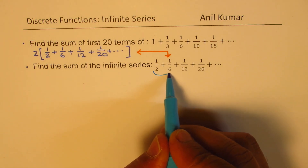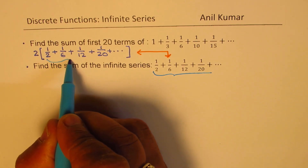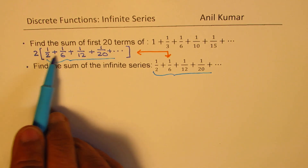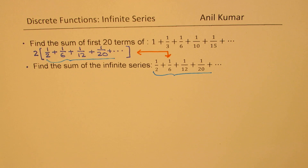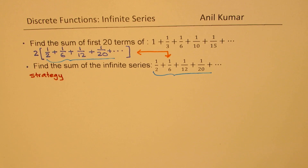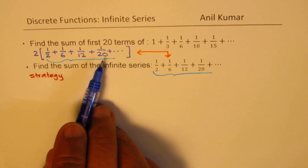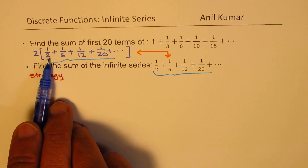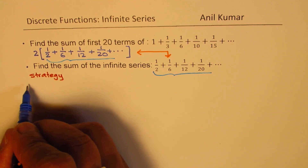The first one is twice the other — they are exactly the same series. So we will now figure out an approach or strategy to solve such questions. This is an important strategy, as it really helps you solve some of the very difficult questions in your test papers. The strategy is to find a general term.